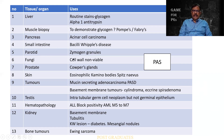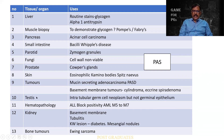Parotid — for the zymogen granules. Fungi — all of us know — mucormycosis and aspergillus. Prostate — the Paget's glands can be positive. Skin — a wonderful reference — Kamino bodies in the case of a Spitz nevus. Tumors — the mucin-secreting adenocarcinoma. Basement membrane in the case of cylindroma, eccrine spiradenoma, etc. Testes — the intratubular germ cell neoplasm will be positive, but not the germinal epithelium.